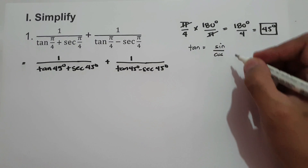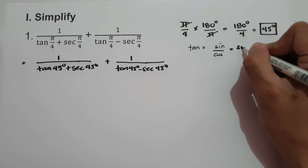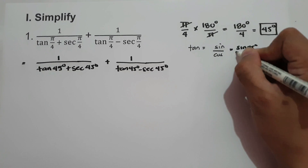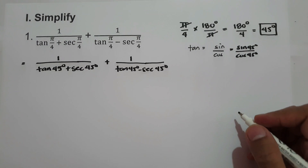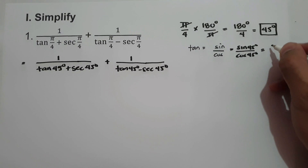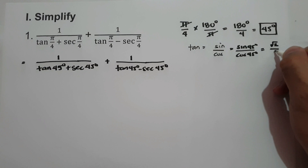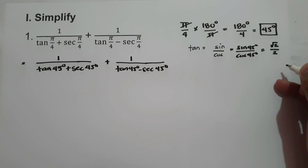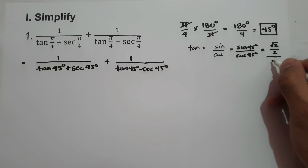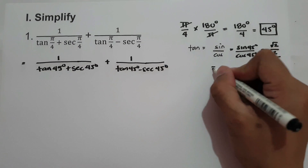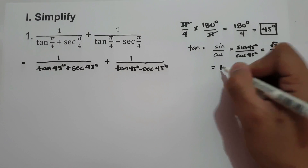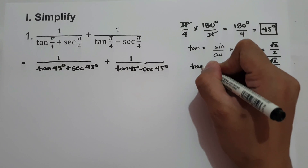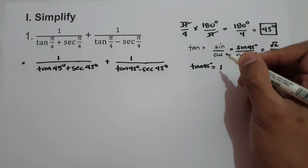So for tangent(45°), we have sine(45°) over cosine(45°). Sine(45°) equals √2/2, and cosine(45°) also equals √2/2. Therefore, (√2/2) divided by (√2/2) equals 1. So the value of tangent(45°) is 1.